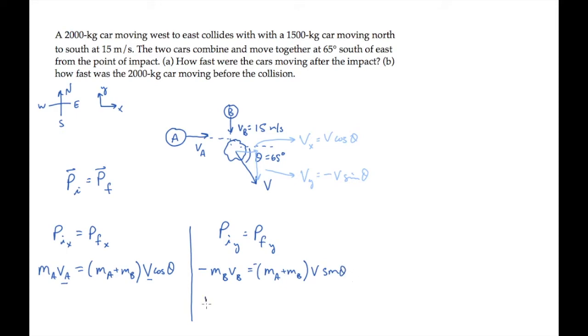This equation has only one unknown, the final combined velocity, so we can solve for it. Substitute numbers to find that the final velocity is 7.1 meters per second. That's the answer to part A.